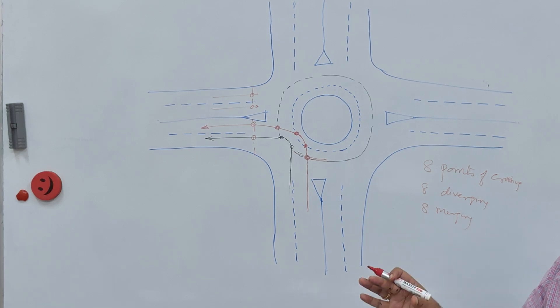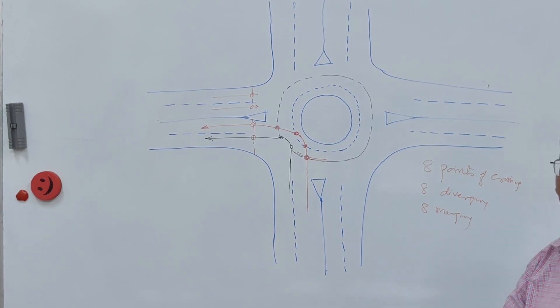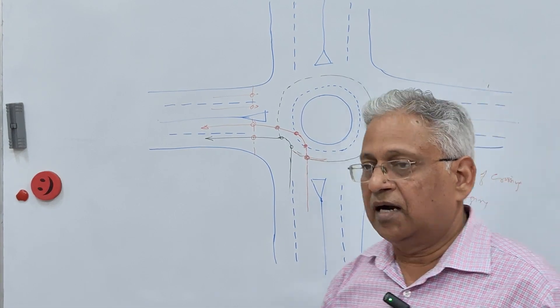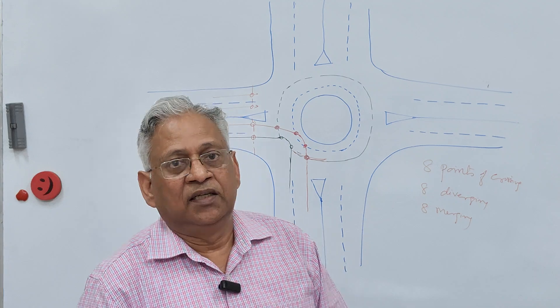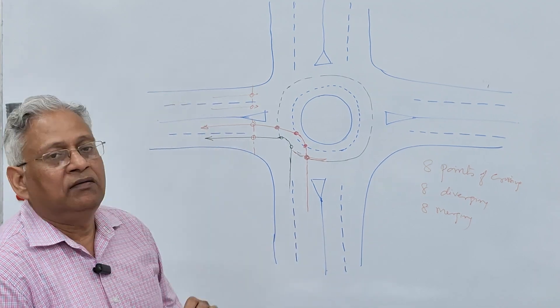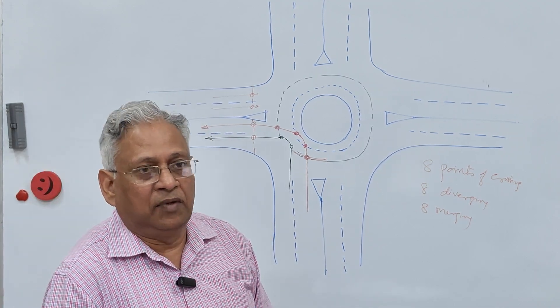That is how we draw conflict points at an intersection. How these points can be reduced by proper planning is discussed in a separate video on how to reduce conflict points at an intersection — you can watch that. Thank you very much for watching this video; if you have any questions, you can write in the comment box.